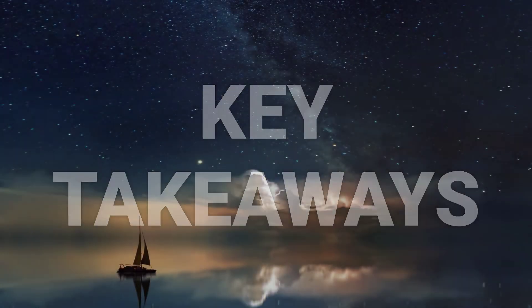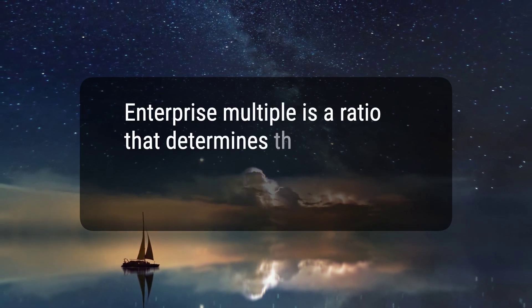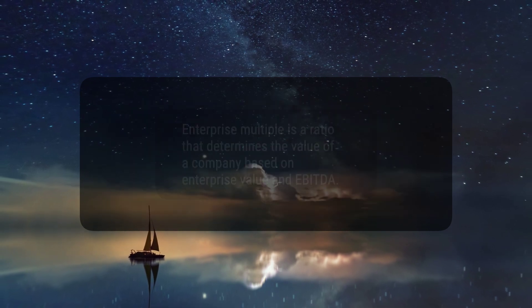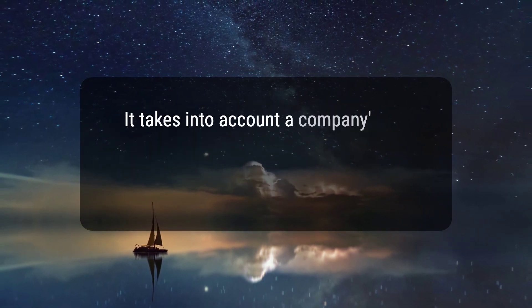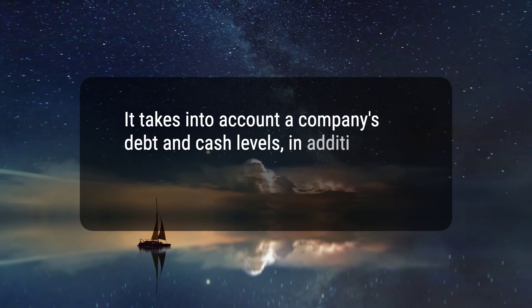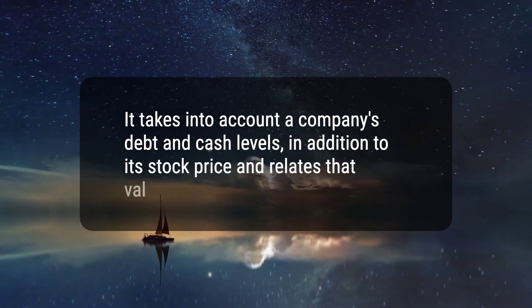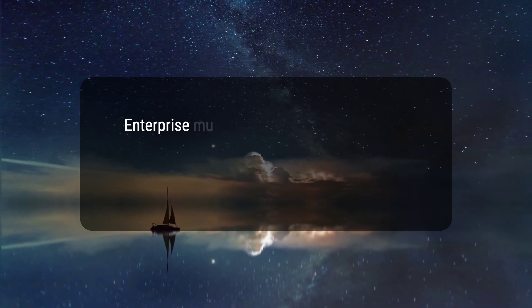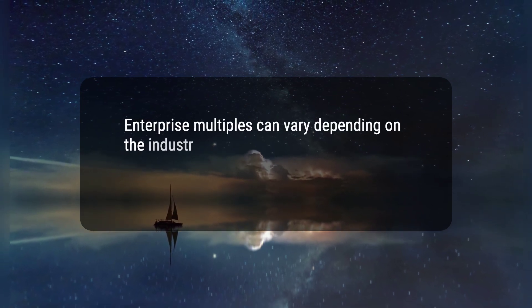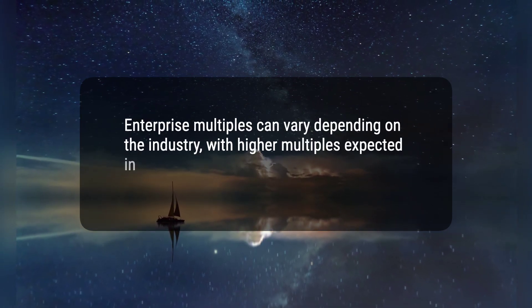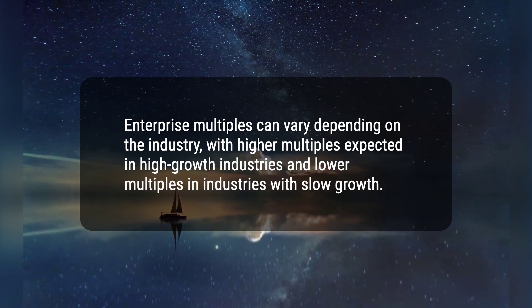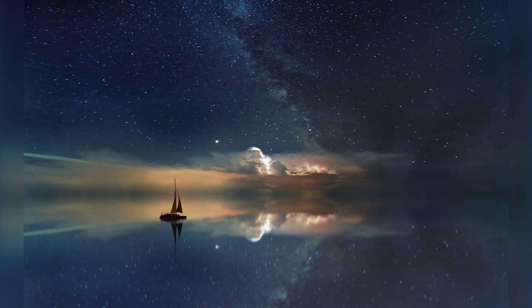Here are three key takeaways. 1. Enterprise multiple is a ratio that determines the value of a company based on enterprise value and EBITDA. 2. It takes into account a company's debt and cash levels, in addition to its stock price, and relates that value to the firm's cash profitability. 3. Enterprise multiples can vary depending on the industry, with higher multiples expected in high-growth industries and lower multiples in industries with slow growth.